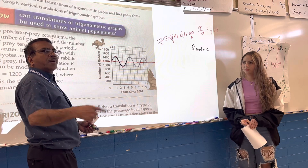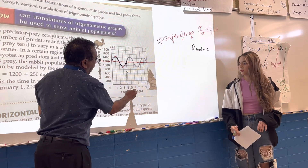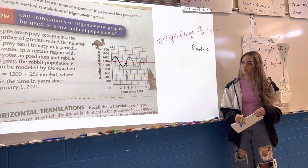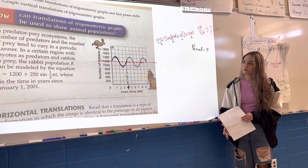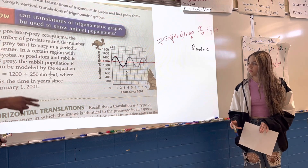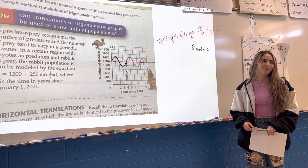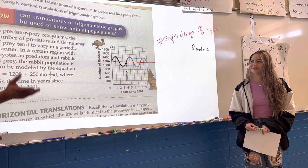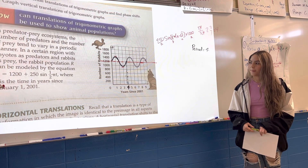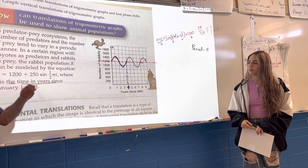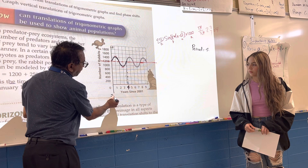Most students robotically do two-pi divided by B, but here you can clearly see that's four years. Now, which specific year is that in the context of this problem? The answer is 2005 — because the problem says 'time in years since January 1st, 2001,' so four years after 2001 is 2005. Perfect.